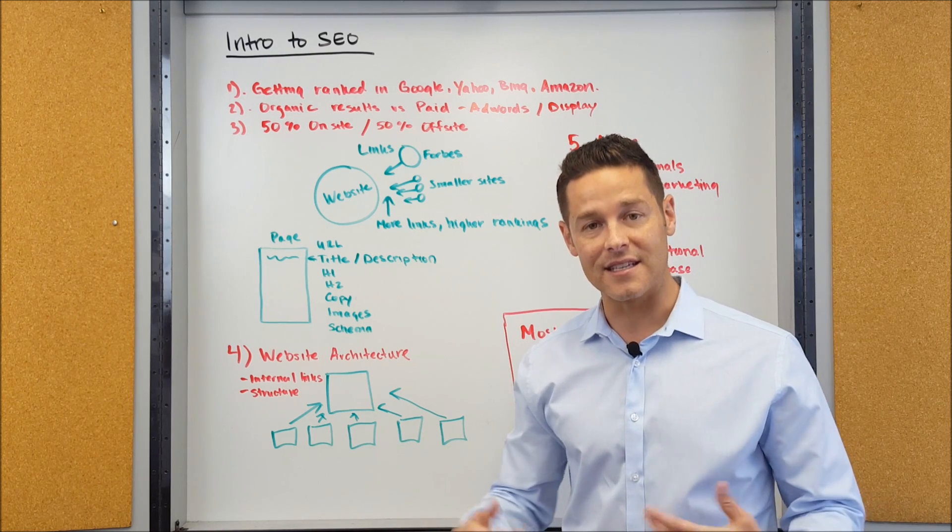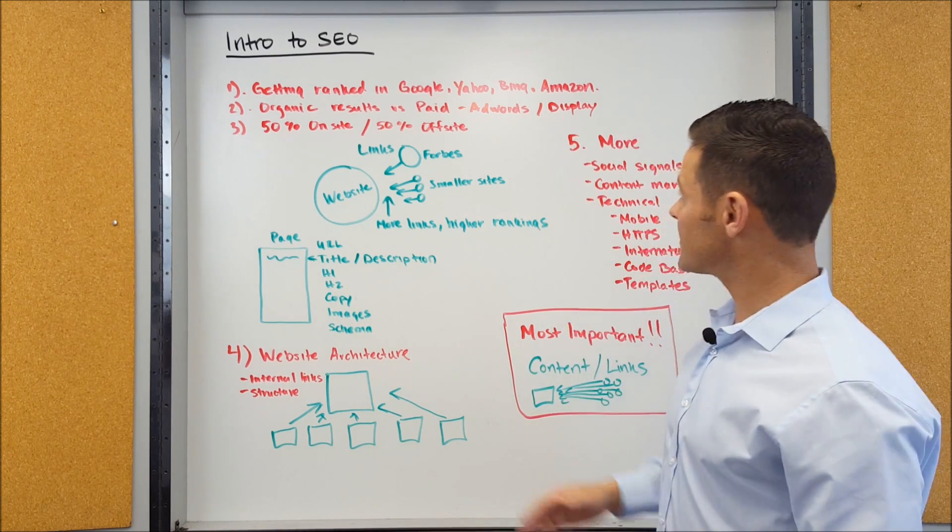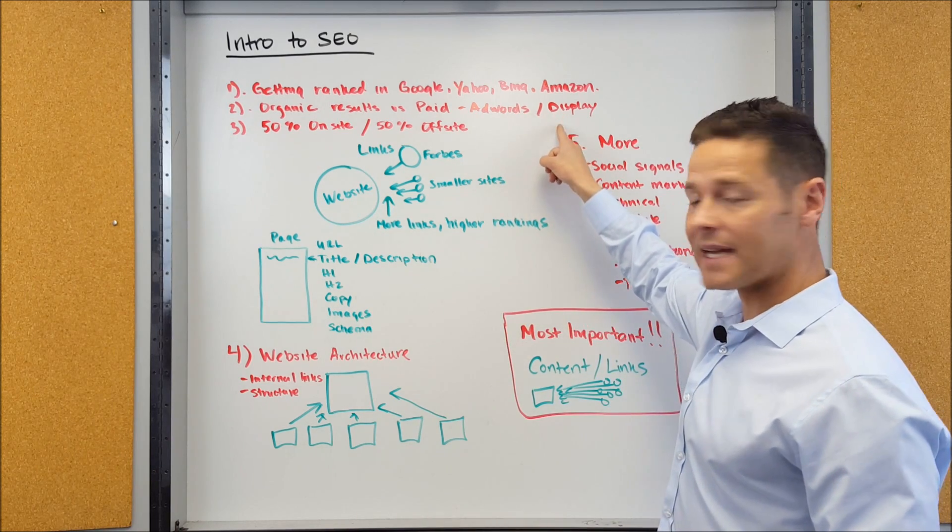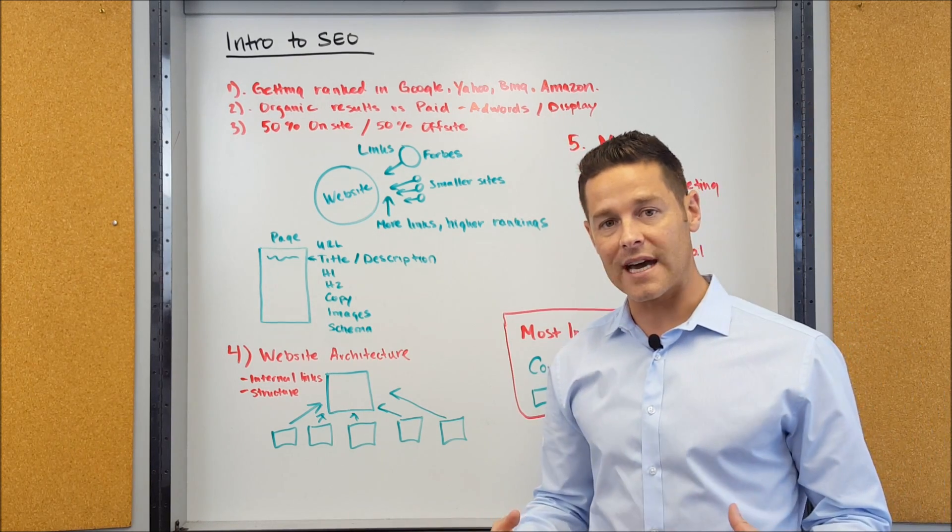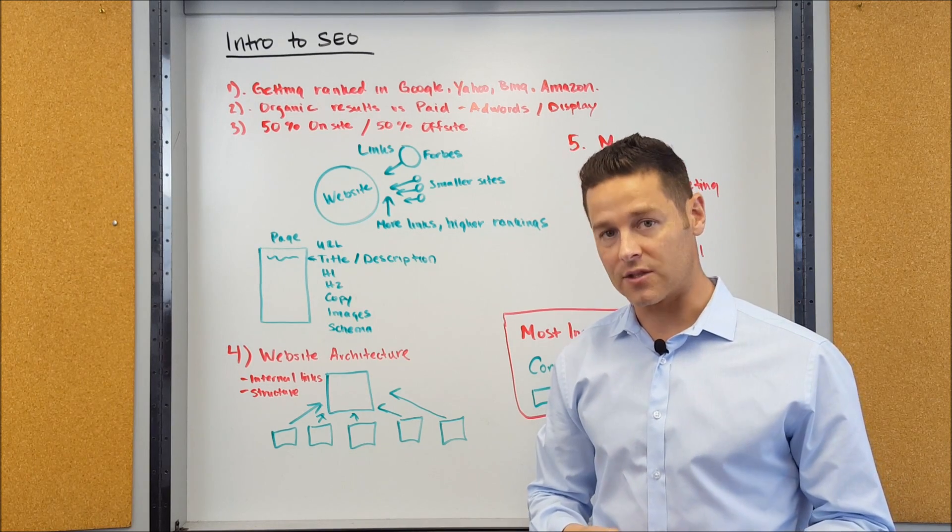When it comes to paid ads inside of Google, there's two types of ads. Basically there's AdWords and there's display ads. The AdWords ads are the ones that are going to show up in the search results.